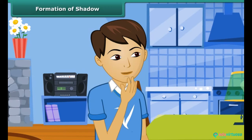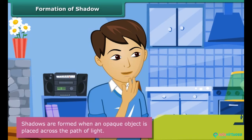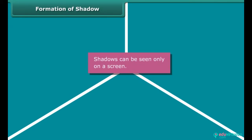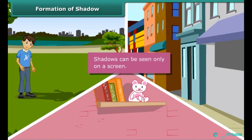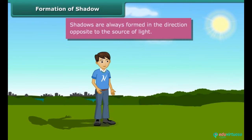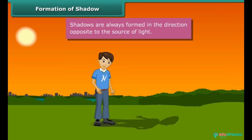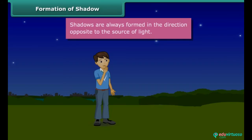You are confused and want to understand when shadows are formed, and the direction in which they are formed. Shadows are formed when an opaque object is placed across the path of light. Shadows can be seen only on a screen — the ground, walls of a room, buildings, and other such surfaces act as screens for shadows. Shadows are always formed in the direction opposite to the source of light. In the morning, since you were facing the sun, the shadow was behind you. In the evening, the sun was behind you, causing the shadow to form in front of you. When the sun sets, there was no light, hence there were no shadows.